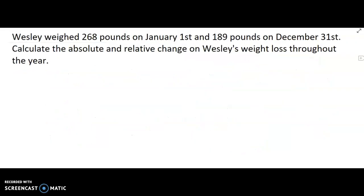Rochester was covered in 2.3 inches of snow on Monday and 8.2 inches of snow on Tuesday. What is the absolute relative change in the amount of snow from Monday to Tuesday? Well, this is our initial. There's our final. So to find the absolute change, we take final minus initial. 8.2 minus 2.3 and our answer there is 5.9.